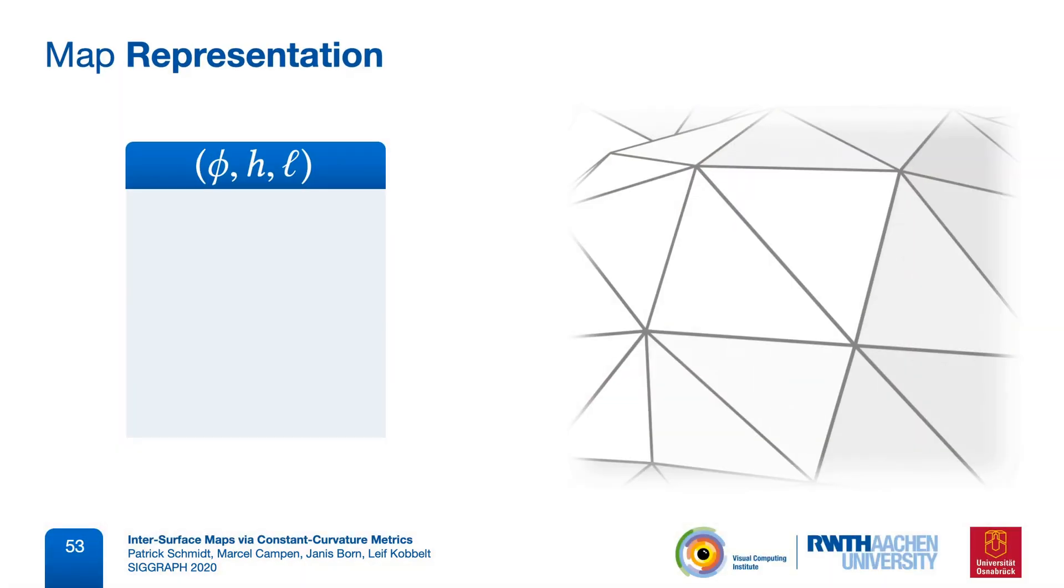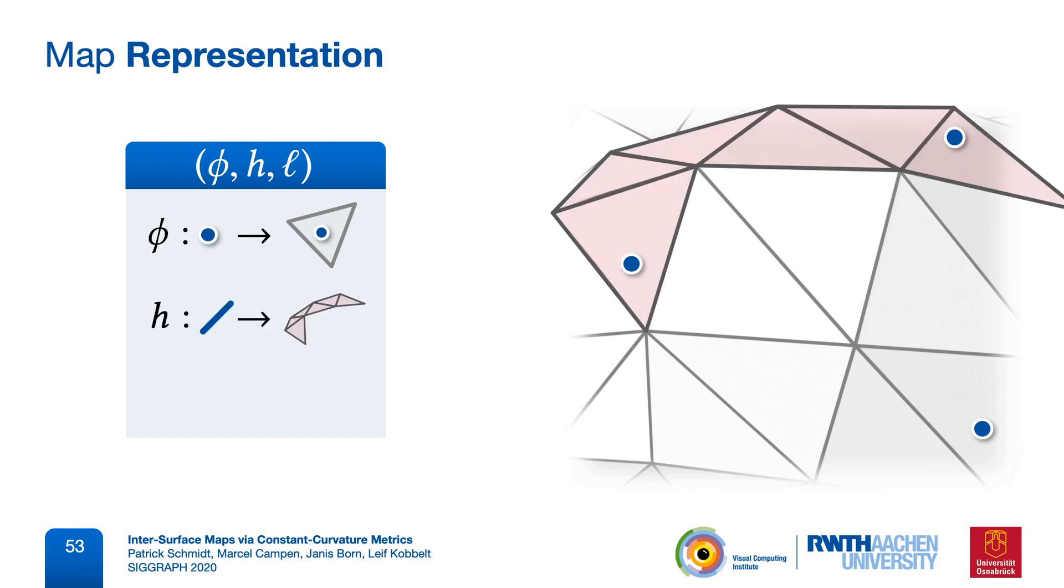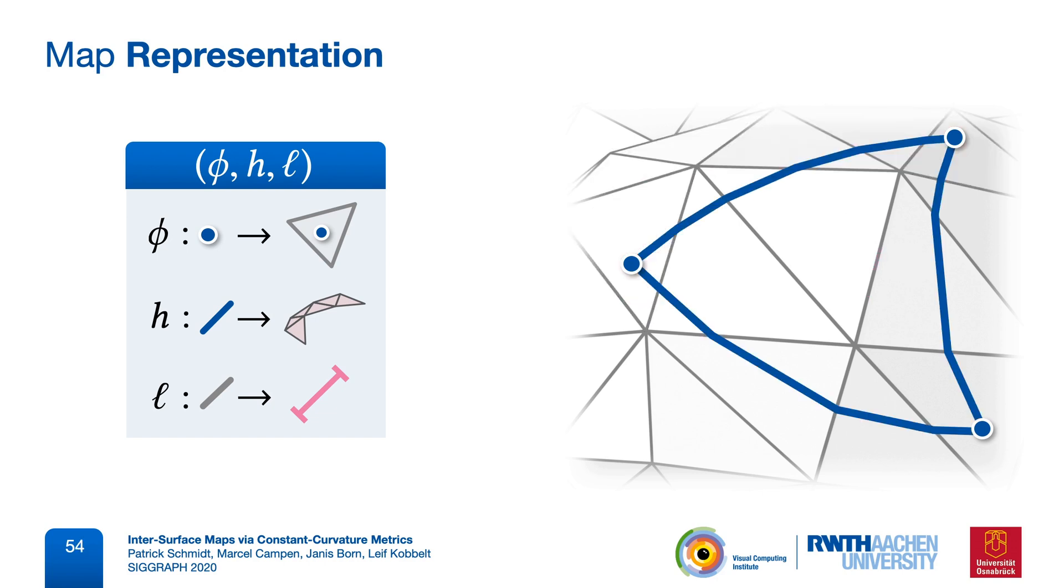Let's summarize the map representation we've developed so far. We explicitly map source vertices to barycentric coordinates in target triangles. We map source edges to homotopy classes via representative triangle strips. And we give target edges a spherical, flat, or hyperbolic length, forming a constant curvature metric. We've seen that this map representation uniquely defines the images of vertices and edges on the target mesh.